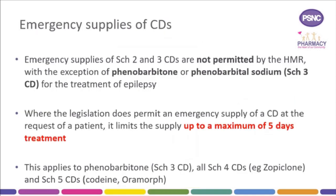The Human Medicines Regulations 2012 set out the maximum quantity that can be supplied as an emergency supply. For CDs in Schedule 1, 2 and 3, emergency supplies at the request of a prescriber are not permitted except for phenobarbital if used for the treatment of epilepsy. Emergency supplies of Schedule 1, 2 and 3 CDs at the request of a patient are also not permitted, with the exception of phenobarbital Schedule 3 for treatment of epilepsy, where the maximum quantity that can be supplied is up to 5 days treatment only. Phenobarbital can be supplied to patients of UK-registered prescribers for the purpose of treating epilepsy. However, emergency supplies of Schedule 1, 2 and 3 CDs, including phenobarbital, cannot be supplied to an EEA or Swiss patient or at the request of an EEA or Swiss prescriber.